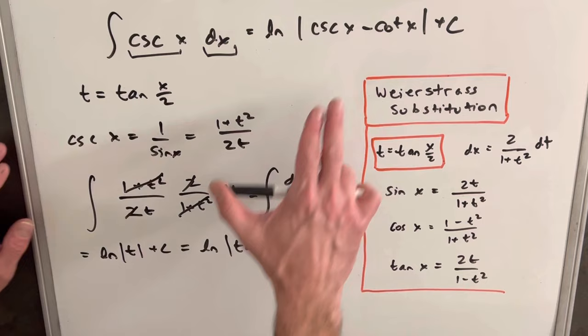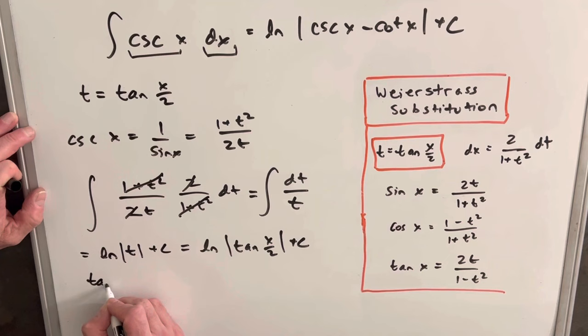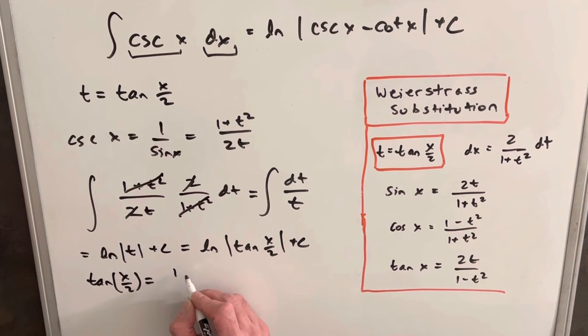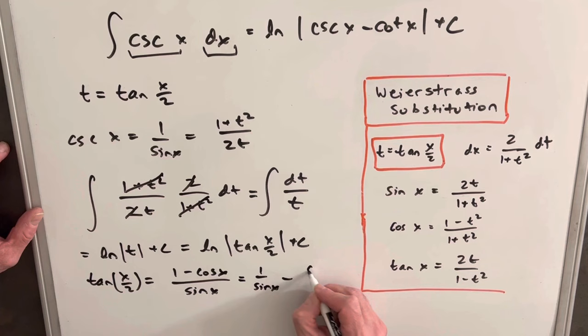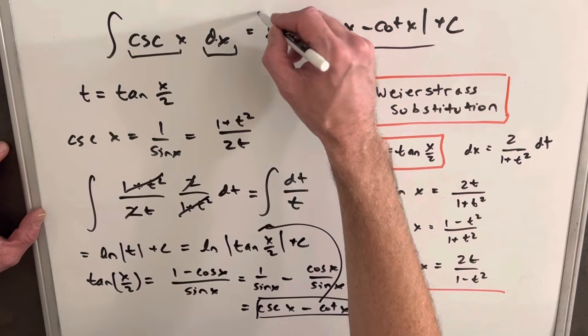So we have this identity for a half angle of tan. Tan of x over 2 is actually equal to 1 minus cos x over sine x. And I believe I did a video deriving this. But I did the derivation of this recently. Anyway, so just using this formula, just a little more simplification, we split this up and write it as 1 over sin x minus cos x over sin x. This is just equal to cosecant x minus cotangent x. And then that just shows us that we would have this in here. And that's exactly our value up here. So we end up with the same solution.